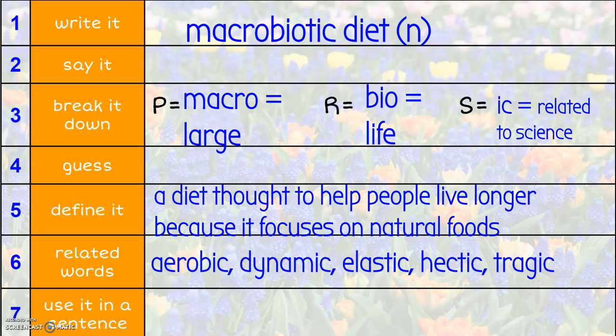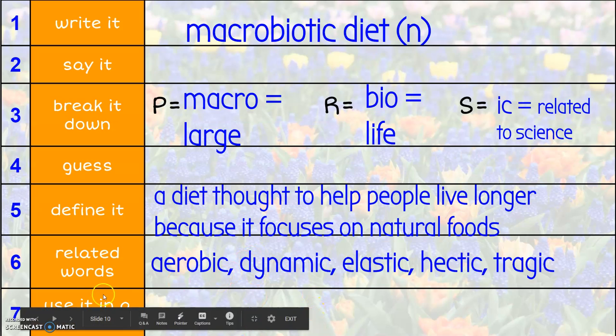Some related words are aerobic, dynamic, elastic, hectic, and tragic. Again, I would just pick the two words that you think you're most familiar with to use as your related words. And then you can go ahead and write your sentence. If you would like to go Google what more examples of macrobiotic diets are, I would bet you've heard of more. I don't know why I can't think of them off of the top of my head, but I know there are lots of them floating around right now. So you could always go Google that and see if it helps you with coming up with a sentence. And when you finish that sentence, you are done for the day with this particular task.